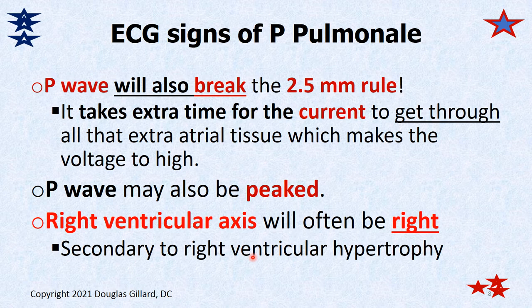What are the signs of P pulmonale? The P wave breaks the 2.5 rule. If the right atrium has gotten super big, there's more tissue, and therefore you'll have a bigger current making a bigger mark on the EKG paper — taller than 2.5 millimeters, wider than 2.5 millimeters. If the patient has pulmonary hypertension or left heart failure and has this P wave finding, they're said to have P pulmonale. A P wave can be peaked sometimes, looking like a tent instead of rounded at the top.